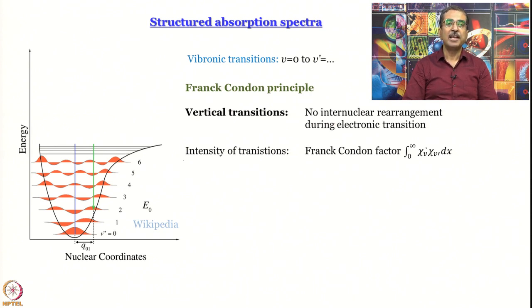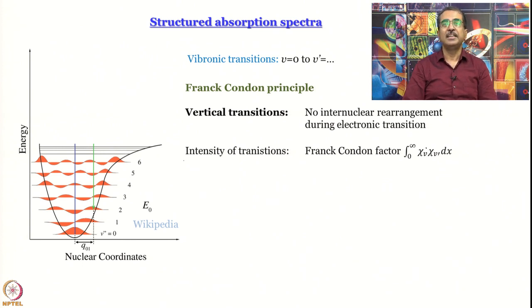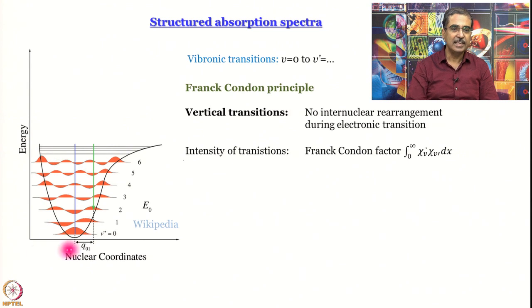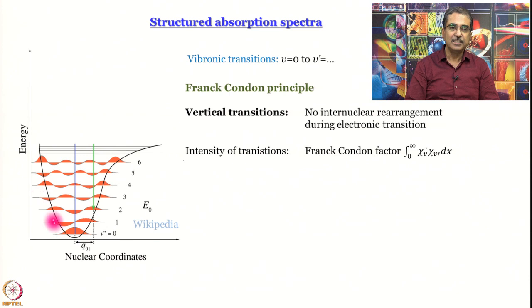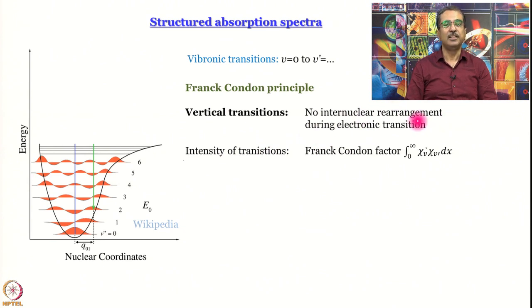This is governed by the Frank-Condon principle. There are two things to understand about it. The Frank-Condon principle started with a classical formulation, which essentially said that transitions are all vertical. In this diagram, the y-axis is energy and the x-axis is nuclear coordinate — for diatomic molecules, it is simply internuclear separation. When a transition is vertical, it means there is no change in internuclear separation during the electronic transition. No nuclear rearrangement takes place during the electronic transition — this is the classical formulation of the Frank-Condon principle.